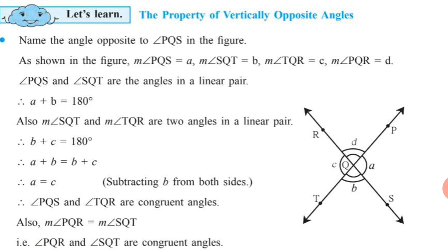Similarly, angle SQT and angle TQR are also two angles in a linear pair. Therefore, B plus C equals 180 degrees — just as A plus B is 180, B plus C is also 180 because they are angles in a linear pair. Therefore, A plus B equals B plus C, because both are equal to 180. When the right-hand sides are equal, the left-hand sides are also equal.